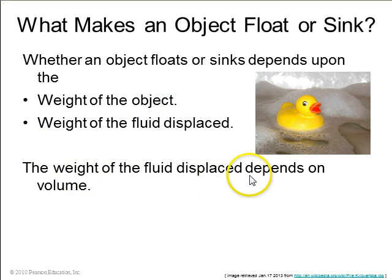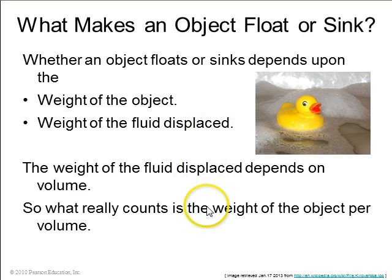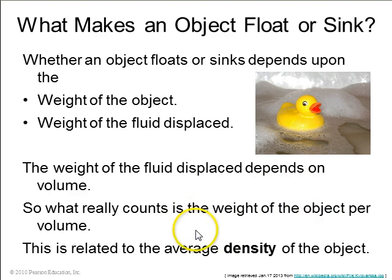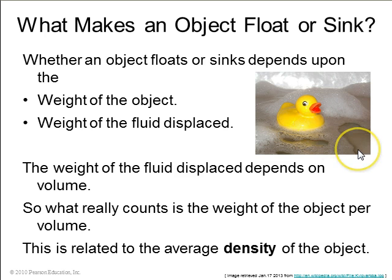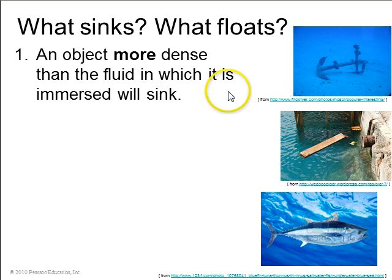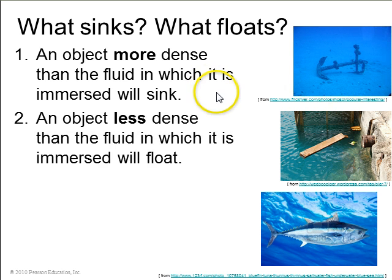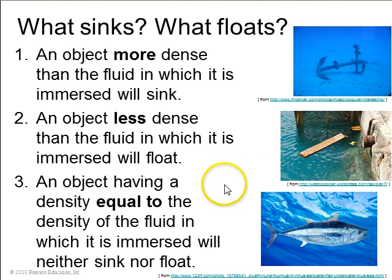The weight of the fluid that's displaced depends on the volume being displaced, so what really counts is the weight of the object per volume, which is related to the average density of the object. The average density of a rubber duck is less than the density of water, and that's why the duck always floats. The rule is: an object more dense than the fluid will sink like an anchor; an object less dense than the fluid will float like a piece of wood; and an object having a density equal to the fluid will hover at whatever height it's already at, like a fish.